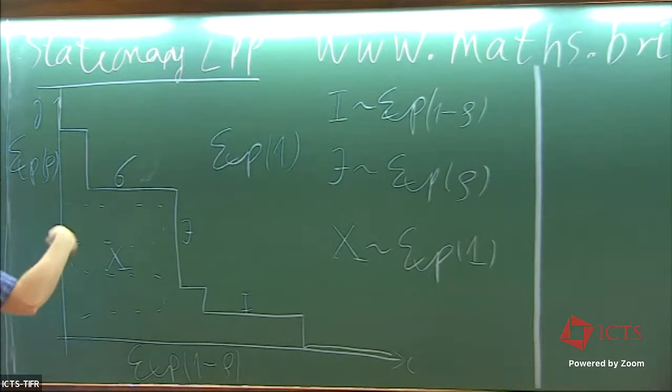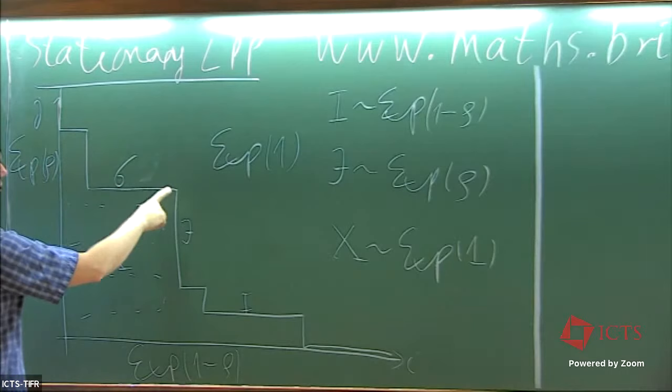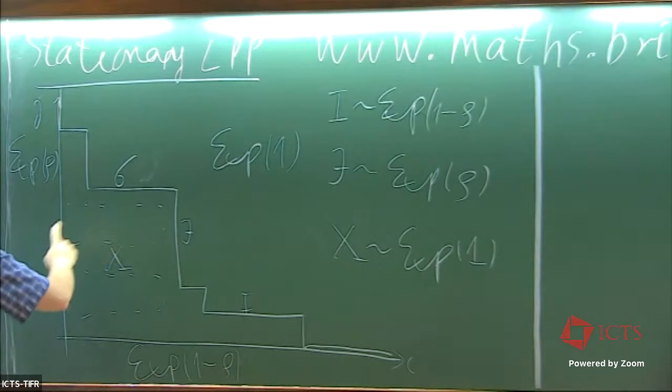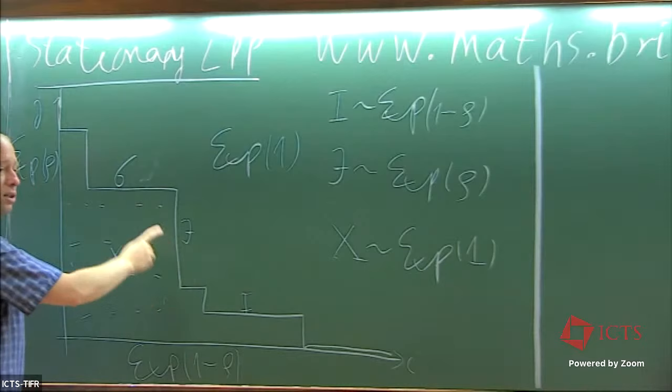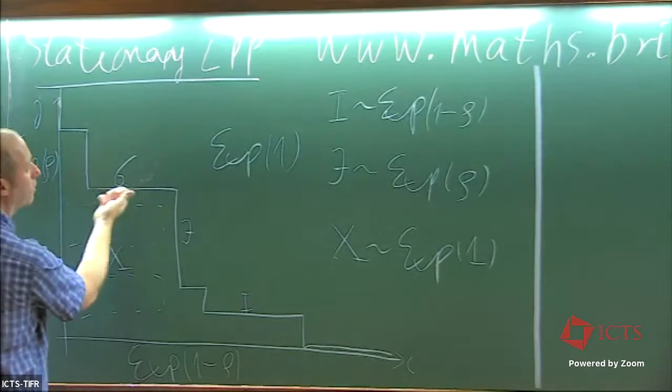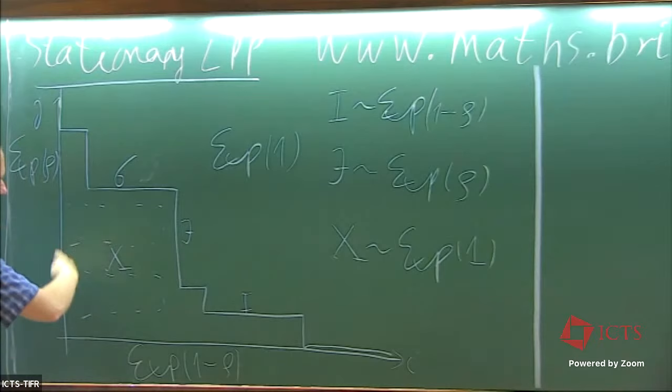What we figured out last time is that if you take any southeast path sigma and record the horizontal increments and the vertical increments around sigma, and record the x-ray levels defined from the i's and j's inside this enclosed region, then you have full independence of these random variables for any fixed sigma southeast path. The distributions are: the i increments are always exponential one minus rho, the vertical j increments are always exponential rho, and the axes inside are always exponential one. These are fully independent — that was the conclusion last time.